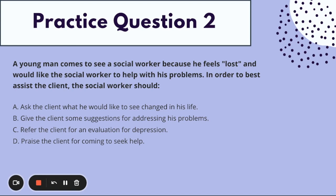We always want to be client-centered and avoid a power differential, so we would rule out B — giving the client suggestions for addressing his problems. The best answer is A: ask the client what he would like to see changed in his life. Meeting the client where they're at, working from a strengths-based approach, and empowering the client — the client is the one who knows themselves best. This gives us something to work from and helps us conceptualize what we're going to do moving forward. Answer A gives the client autonomy, helps build rapport, and avoids creating a power dynamic.